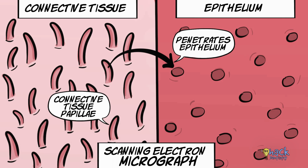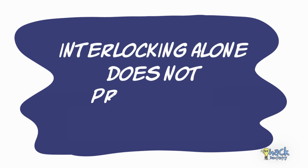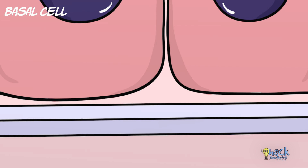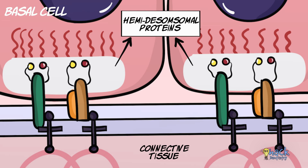That being said, interlocking alone does not provide for a firm attachment. It has to be understood that the basal cells of the epithelium do not sit directly on the connective tissue, but are rather attached to it with the help of intercellular junctions called hemidesmosomes, which lie on a structure called the basal lamina.